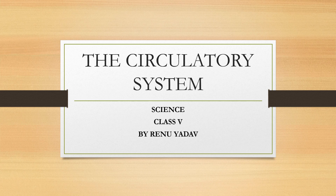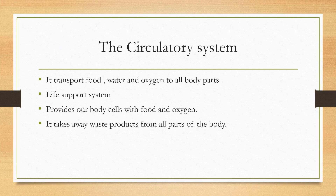Good morning students, I'm Renu Yadav and I will teach you science class 5. The first topic is the circulatory system. Food, water and oxygen are required by all organisms to stay alive. These materials are produced in one part of the body but must reach all parts of the body.